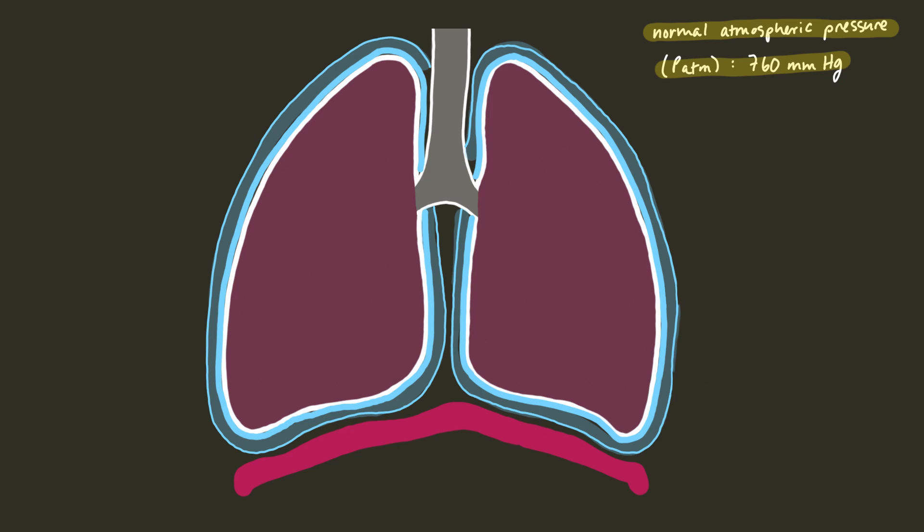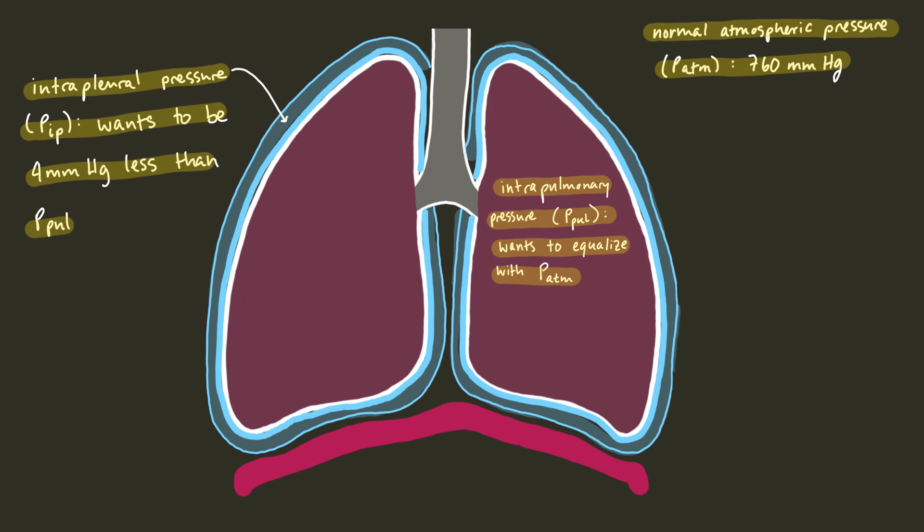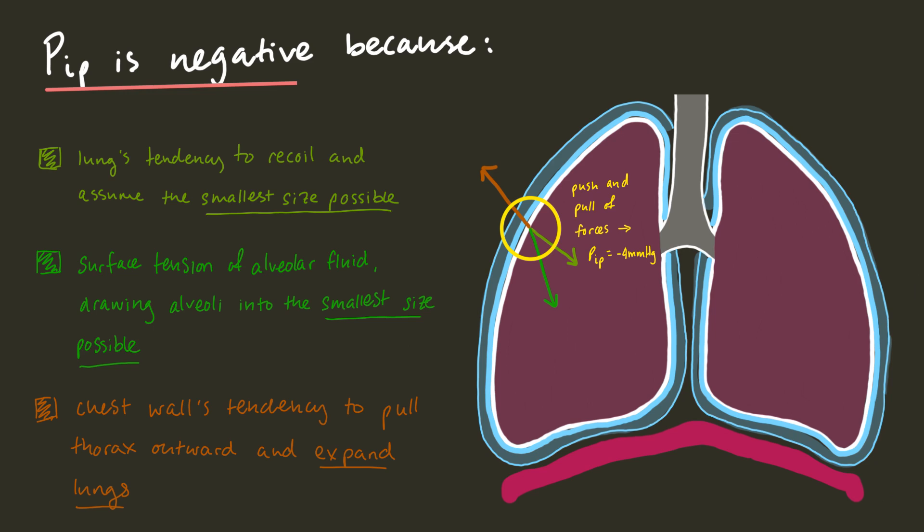The intrapulmonary pressure is the pressure in the alveoli of the lungs, and will rise and fall during the different phases of breathing, but it always wants to equalize with atmospheric pressure. The intrapleural pressure is the pressure in the pleural cavity. Intrapleural pressure will also vary with the different phases of breathing, but is always about 4 mmHg less than the intrapulmonary pressure.